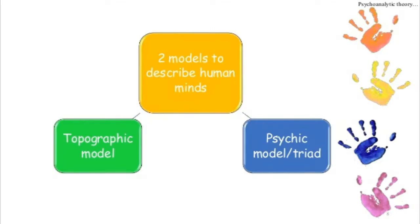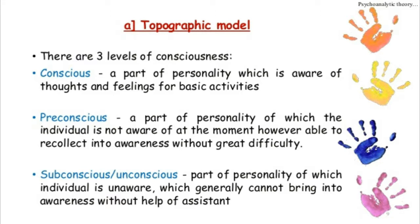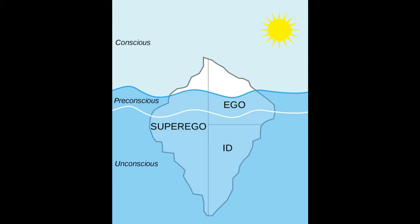Freud believed that life was built around tension and pleasure. All tension was due to build-up of sexual energy and all pleasure came from its discharge. There are two models to describe the human mind: the topographic model and the psychic model or triad. In the topographic model, there are three levels of consciousness: conscious, pre-conscious, and subconscious. The conscious is the part of personality aware of thoughts and feelings. The pre-conscious is the part the individual is not aware of at the moment but able to recollect without great difficulty. The subconscious or unconscious is the part the individual is unaware of and generally cannot bring into awareness. Freud described the human mind as an iceberg — only 10% is visible, i.e. conscious, whereas the other 90% is beneath, unconscious.